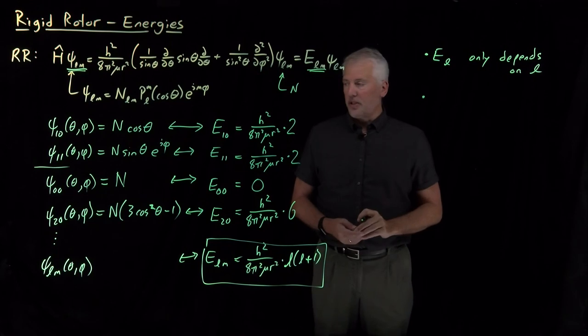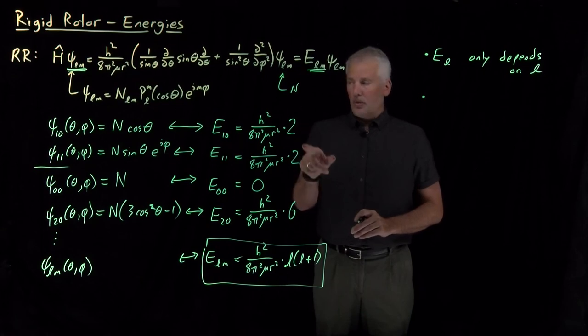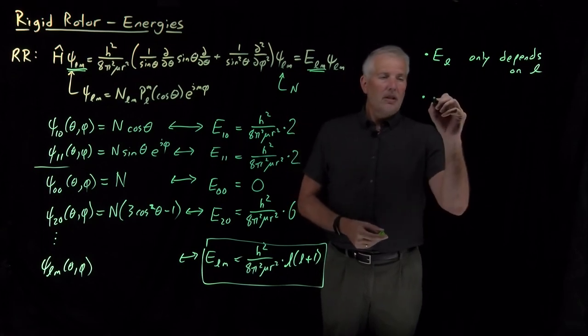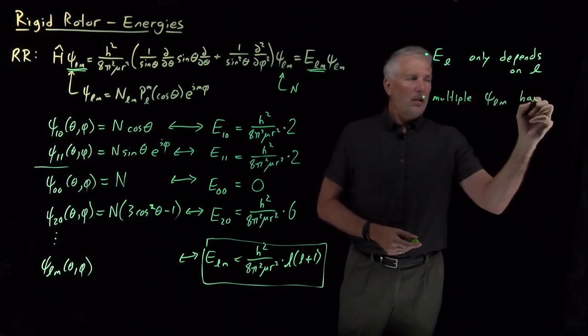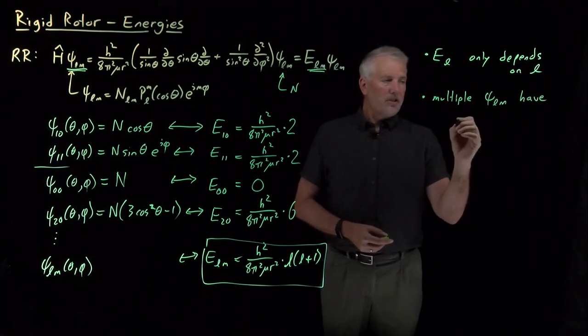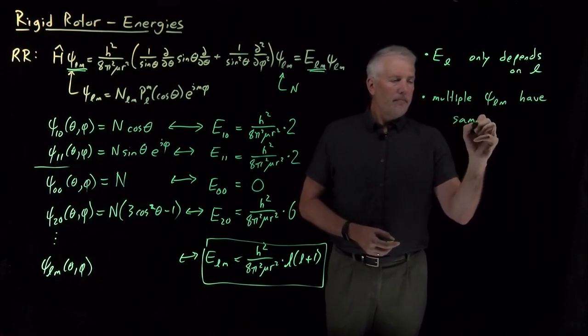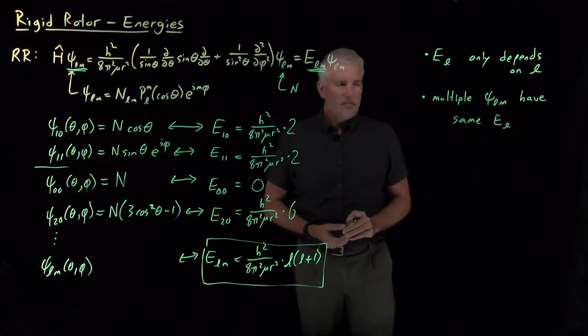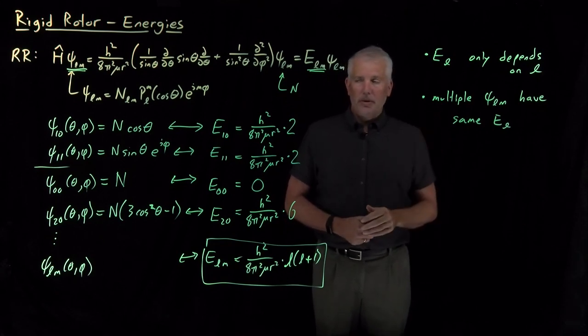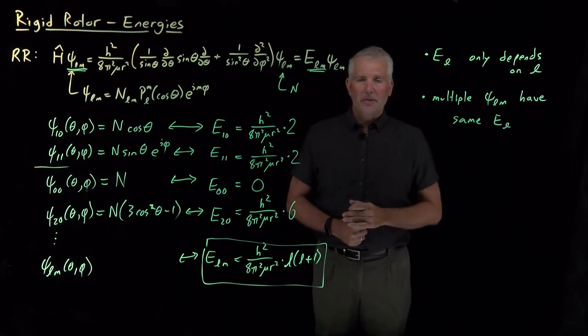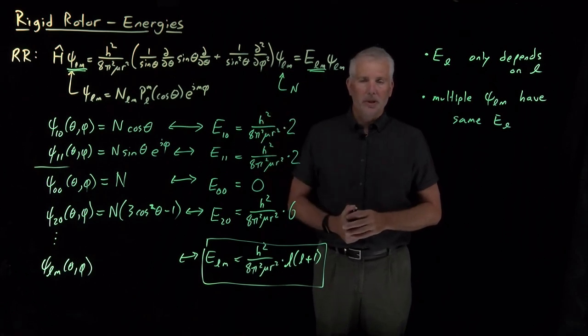The other important consequence is because multiple wave functions, the 1,0, the 1,1, even the 1, negative 1 wave function, all have the same energy as each other. So, multiple wave functions, psi L M, have the same energy, E sub L. That idea begins to sound like the concept of degeneracy that we've talked about previously, and the degeneracy of these wave functions turns out to have some pretty important consequences for the properties of the molecules that we treat with the rigid rotor approximation. Our next step will be to explore that degeneracy a little further.